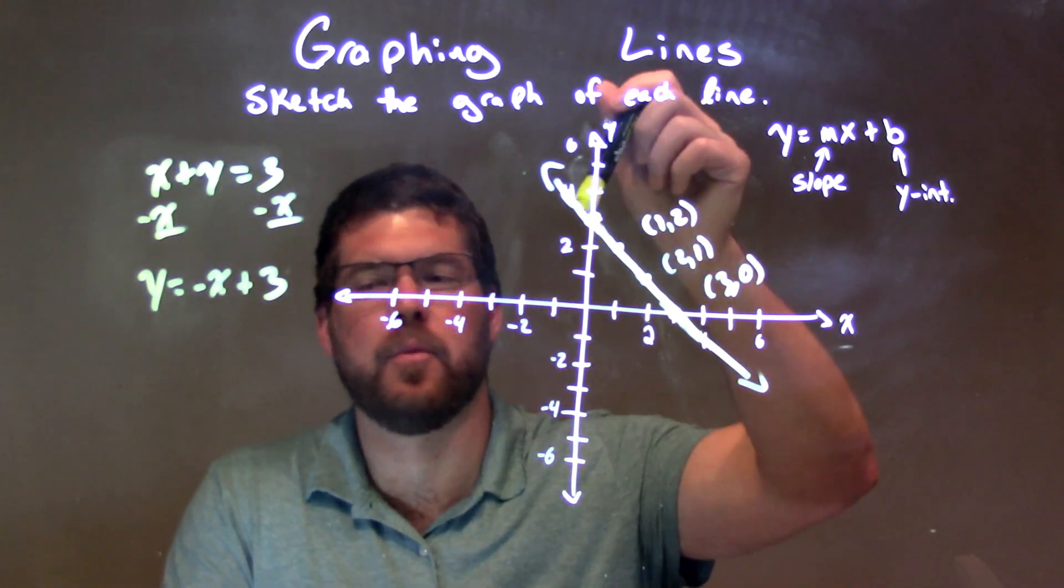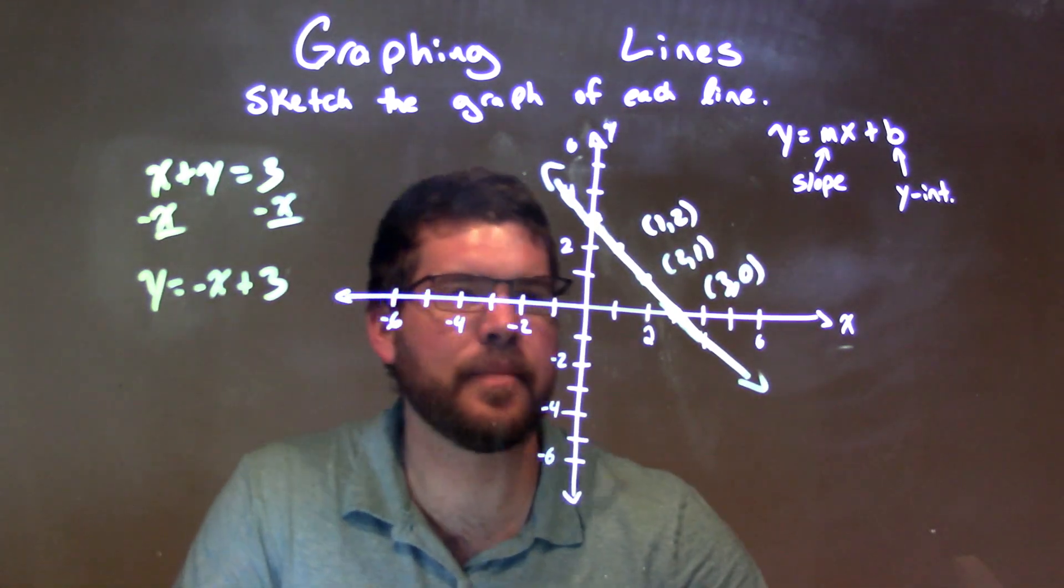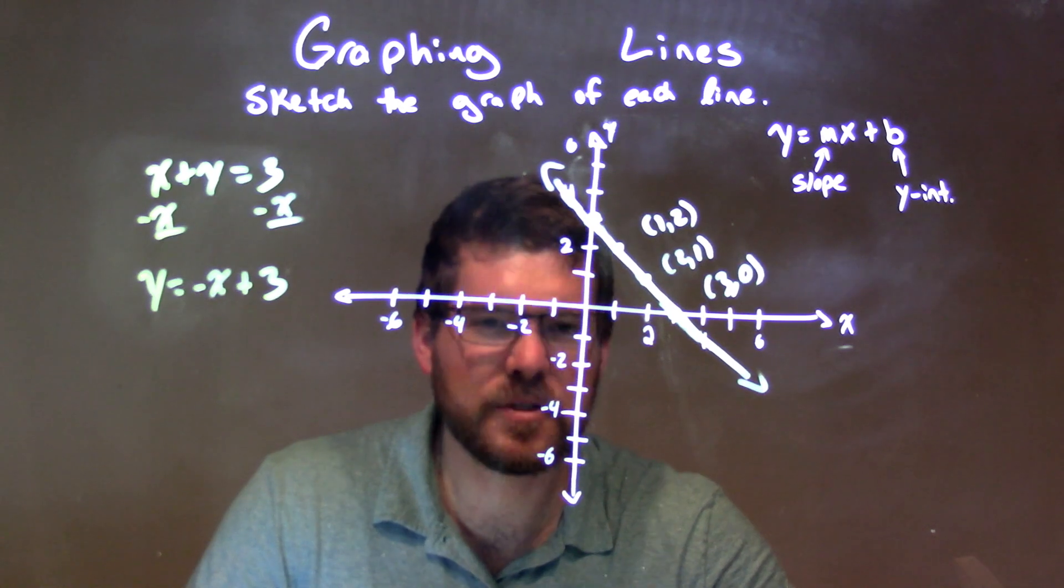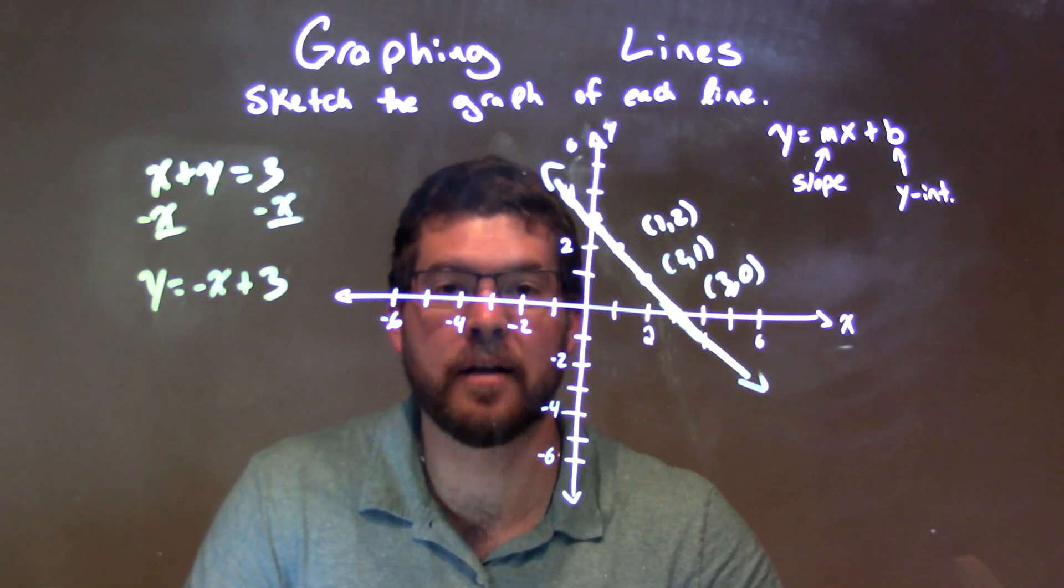Positive 3 is our y-intercept. Our slope was negative 1, so we went down 1 over 1, down 1 over 1. And that gave us three extra points, which gave us our line when we connected them, and so here's our graph, which is our line.